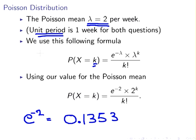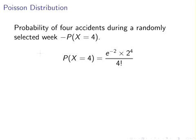So we're ready to begin our question. The probability of four accidents in a randomly selected week - that's probability of X equal to 4. Here's how we would calculate that. In this particular case k is equal to 4, so e to the minus 2 times 2 to the power of 4 all over 4 factorial. This is equal to 0.1353...